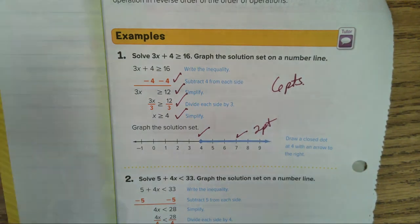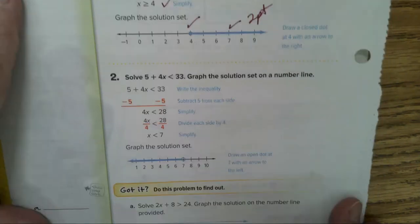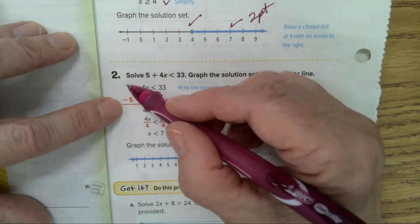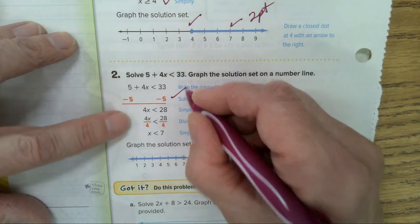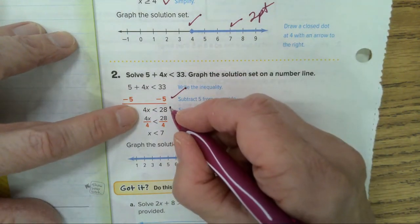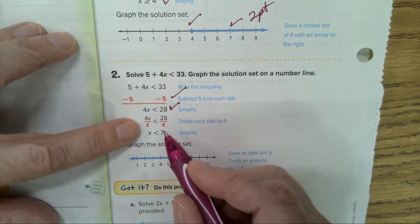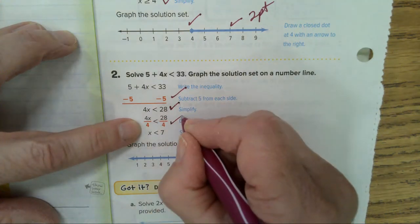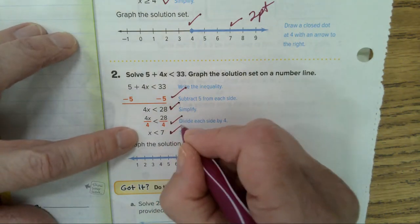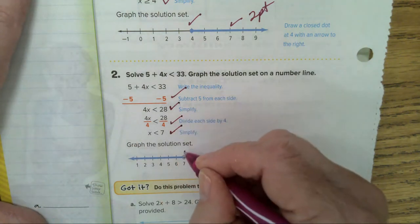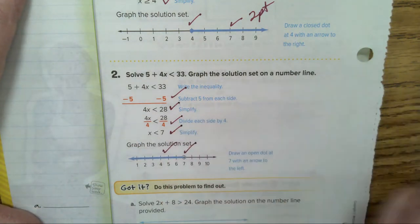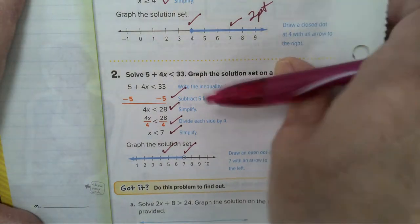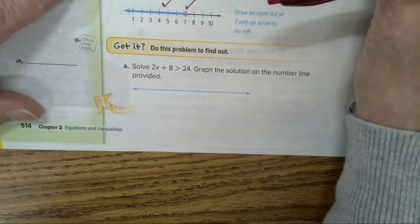Let's look at number two. First you undo what you're adding or subtracting, so we get rid of the five, minus five. That's a point. You get 4x is less than 28, that's a point. Now you can go ahead and divide both sides by four. That's a point. X is less than seven is a point. Open circle is a point and the direction of your line is a point.